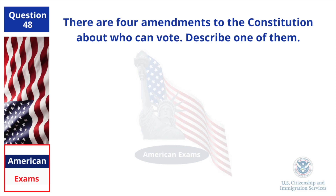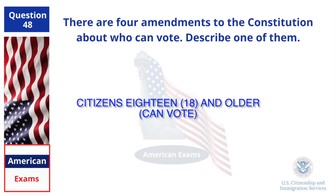There are four amendments to the Constitution about who can vote. Describe one of them. Citizens 18 and older can vote.